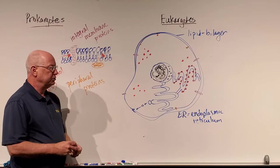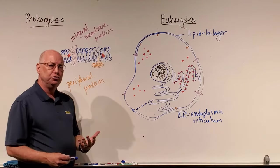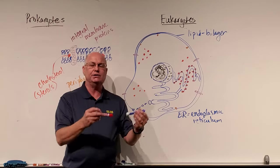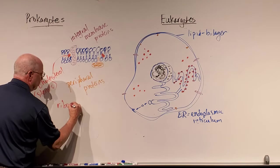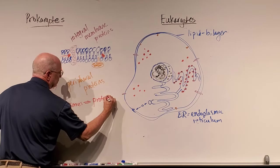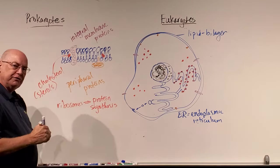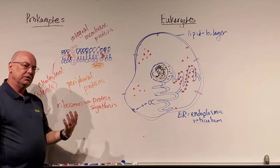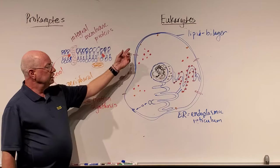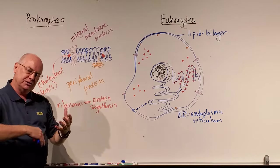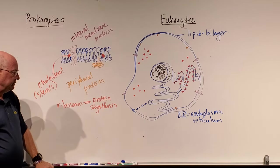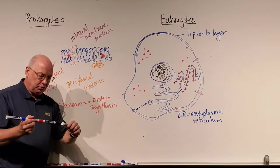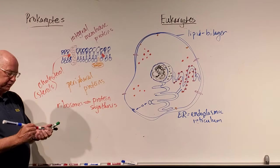All ribosomes read a messenger RNA and build a protein — ribosomes' main function is protein synthesis. The messenger RNA tells them what order to put amino acids in. Proteins are the functional molecules in our cells: they are enzymes performing biochemical reactions, they provide cytoskeletal shape and structure, and they form integral membrane proteins and peripheral proteins. Integral membrane proteins can allow substances to enter or exit the cell, as in ion channels.